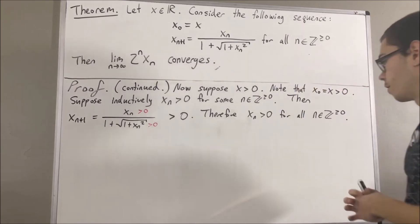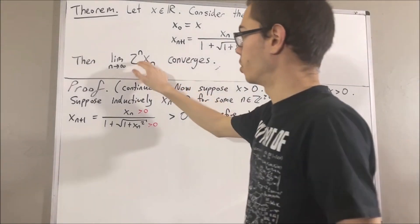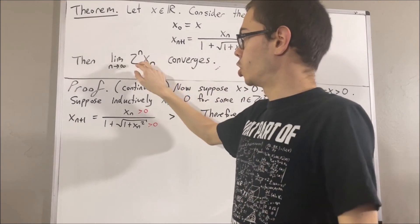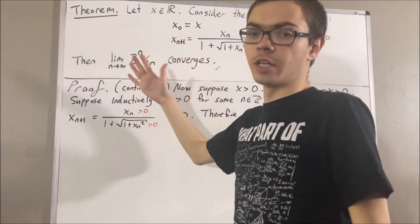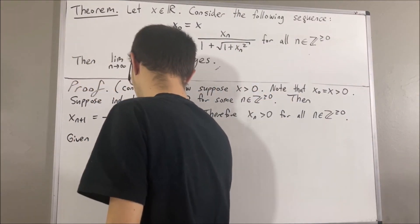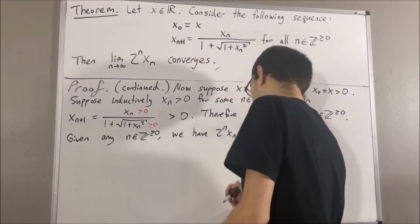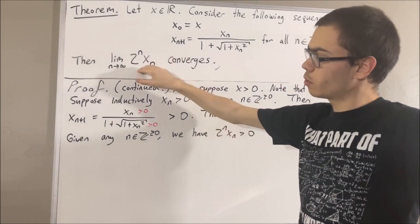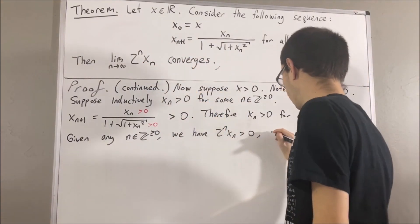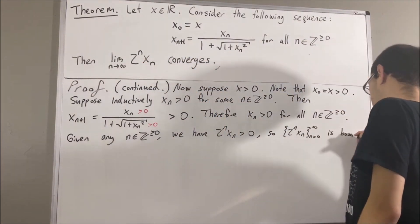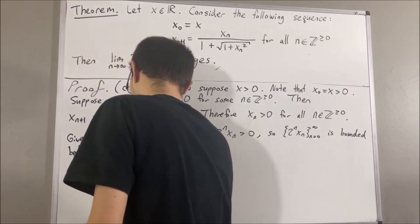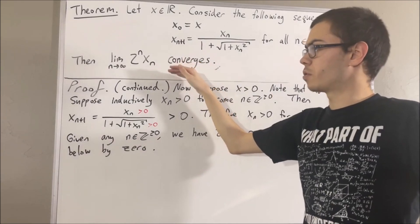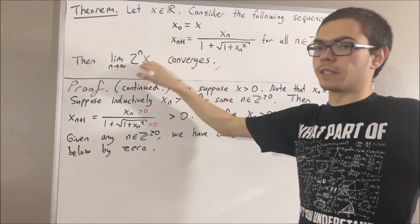If we consider any n, we have that 2 to the n times xn is greater than 0, because 2 to the n is greater than 0 and xn is greater than 0. So every term of the sequence is greater than 0, meaning the sequence is bounded below by 0. To show that this sequence converges, all we have to show now is that this sequence is a decreasing sequence.